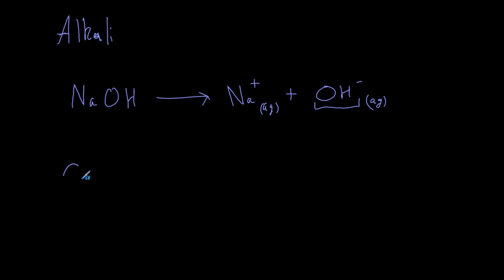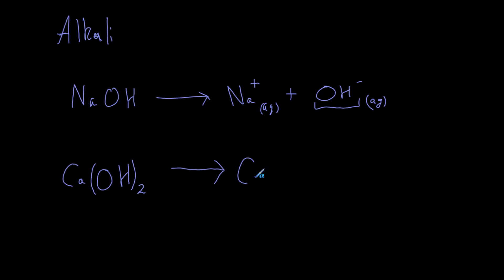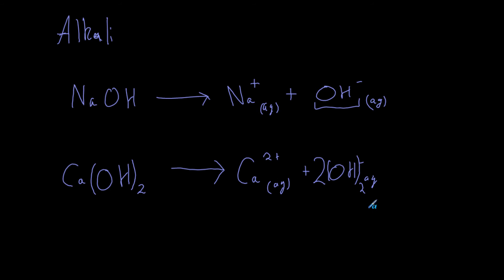What if we add calcium hydroxide? Calcium has a plus two charge, so to balance that we need two hydroxide ions — Ca(OH)₂. When this dissociates we get our calcium ion Ca²⁺ in solution, plus two OH⁻ ions in solution. The reason we write two in front of OH⁻ and not in brackets with a subscript is because two hydroxides don't bind together — they are formed separately.